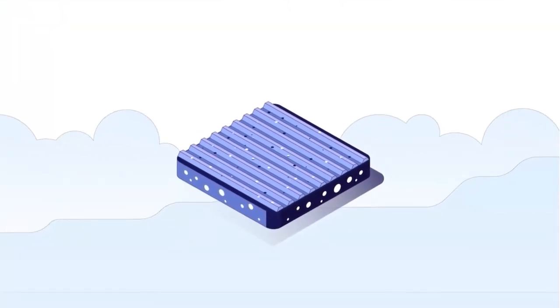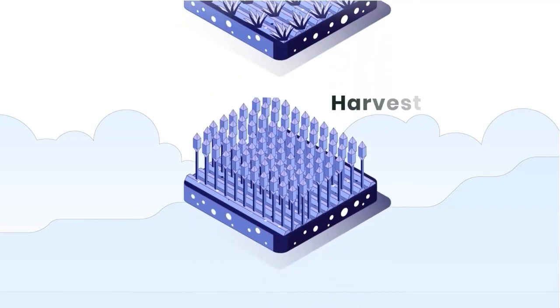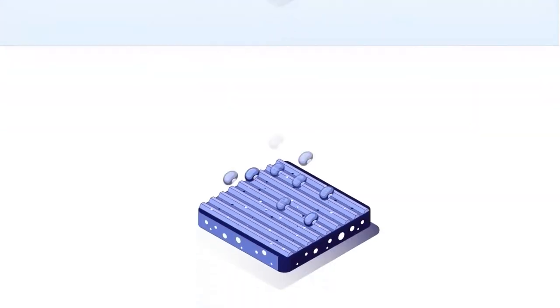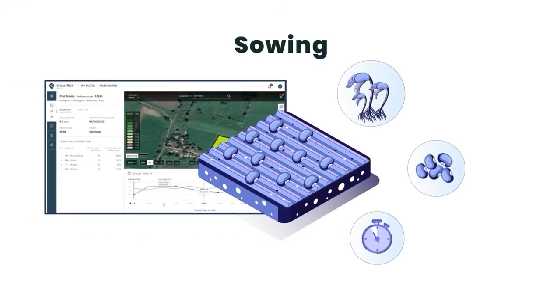Enterprises can thus improve their per-unit area output at every crop stage, from sowing to harvest. Sowing: Improve germination rate by determining the optimum time to sow.